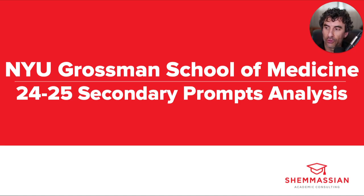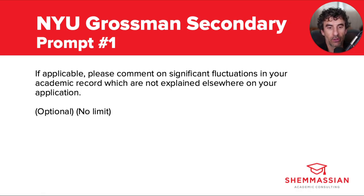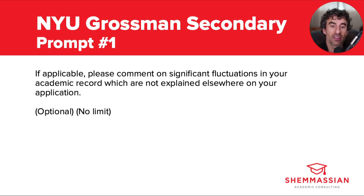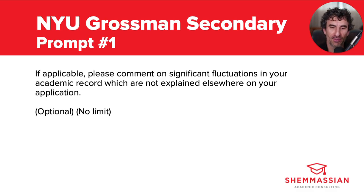Let's take a look at the first prompt from NYU. It reads: "If applicable, please comment on significant fluctuations in your academic record, which are not explained elsewhere on your application." There is no word or character limit for your response to this prompt. So it's important to establish right off the bat what they mean by significant fluctuations. Although they don't give us an exact definition, we can safely assume that they aren't concerned about a couple of Bs here and there.